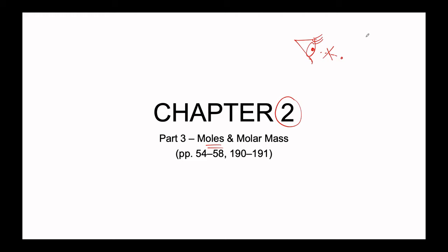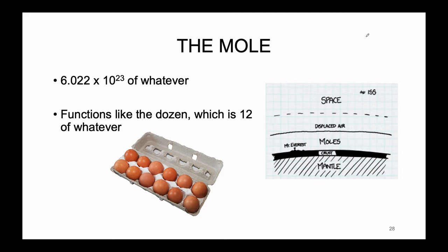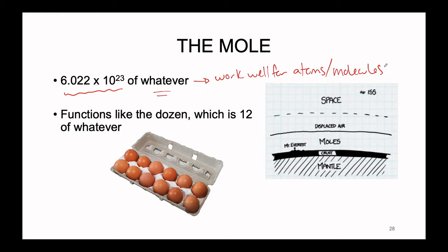Of course, atoms are too very small for us to be able to actively see them with the naked eye. We can't actually see atoms, so how is it that we count them? How do we know how many atoms or molecules we are working with? Well, that comes down to the unit of the mole. So what is the mole? The mole quite simply is 6.022 times 10 to the 23 of whatever. It functions effectively like the dozen, which is just 12 of whatever. We can think of the mole as the chemist's dozen.